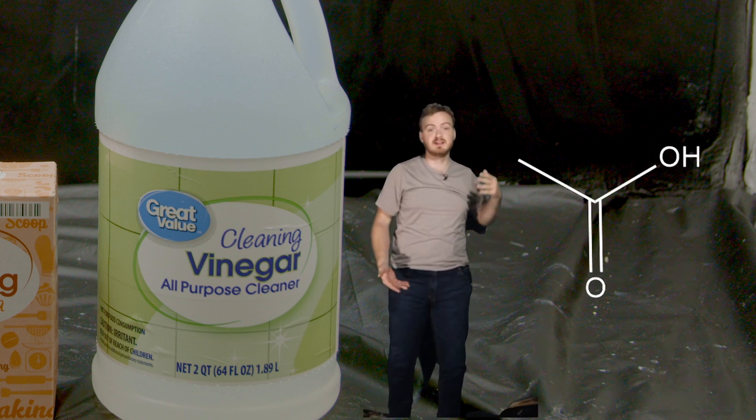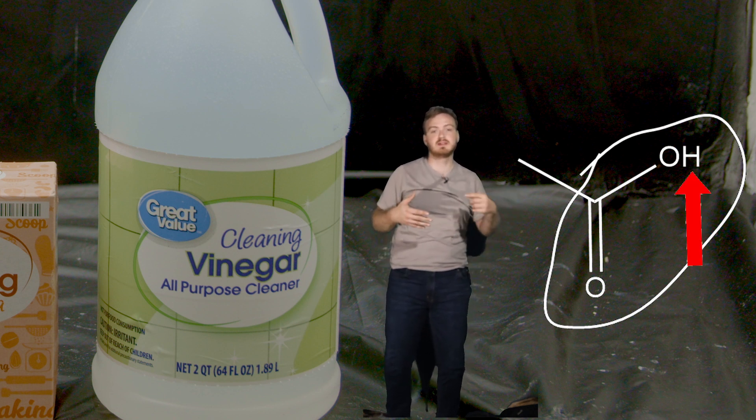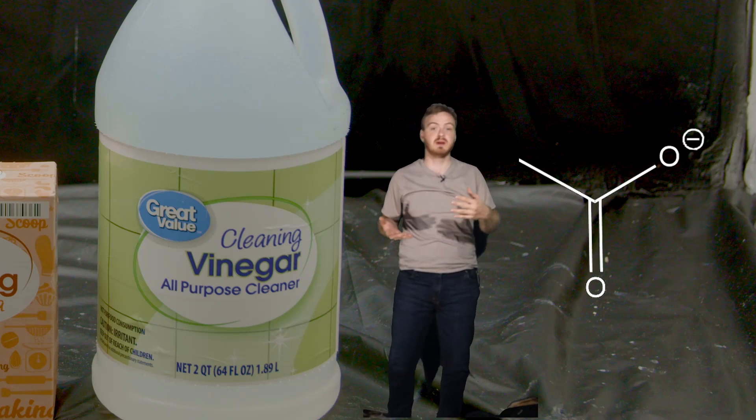You see, acetic acid contains a carboxylic acid group. This carboxylic acid group is really prone to losing its hydrogen, and if we can replace it with something, then we should be able to make a salt.